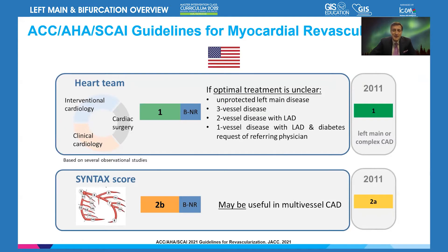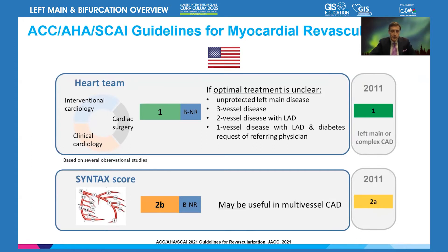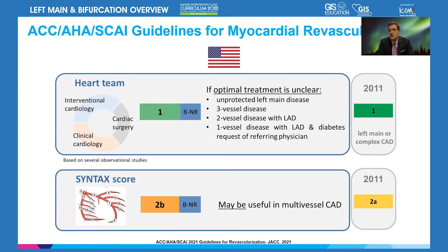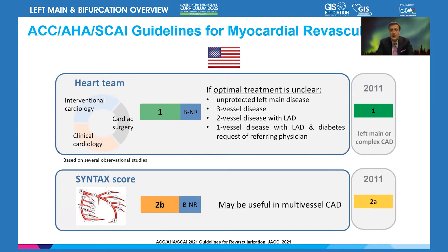The Syntax score has been downgraded from 2A to 2B — not a major change, but it indicates that it's very complex. If it were easy and everybody could use it, that would be one thing, but it's on the complex side. People end up having inaccurate results, and therefore the extent of disease can be assessed in many other ways.